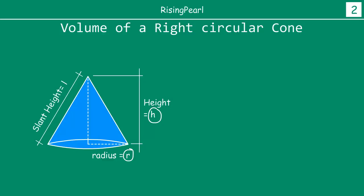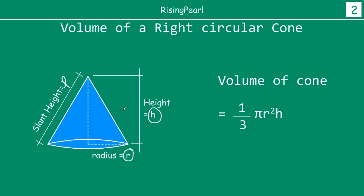Similarly, we can find out the surface area of a right circular cone. The volume of a right circular cone will be equal to 1/3 times π r² h. l is the slant height. This length is l, this is h, and this is r. You can think of the triangle formed by the dotted lines and this solid line as a right triangle. Applying Pythagoras theorem, we can say l² = h² + r².